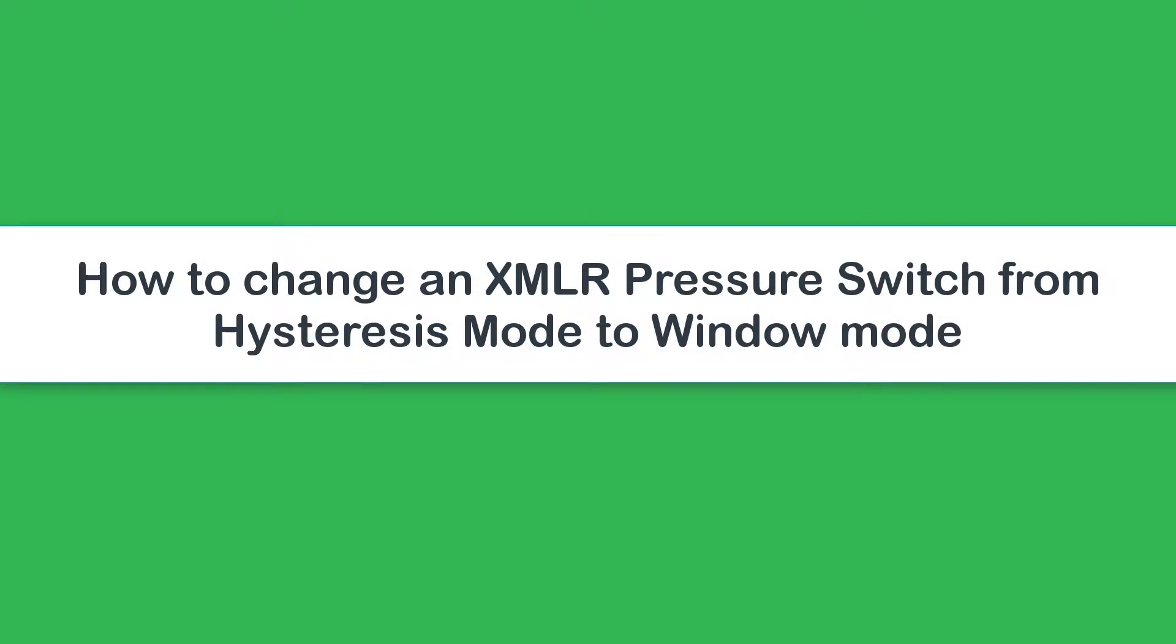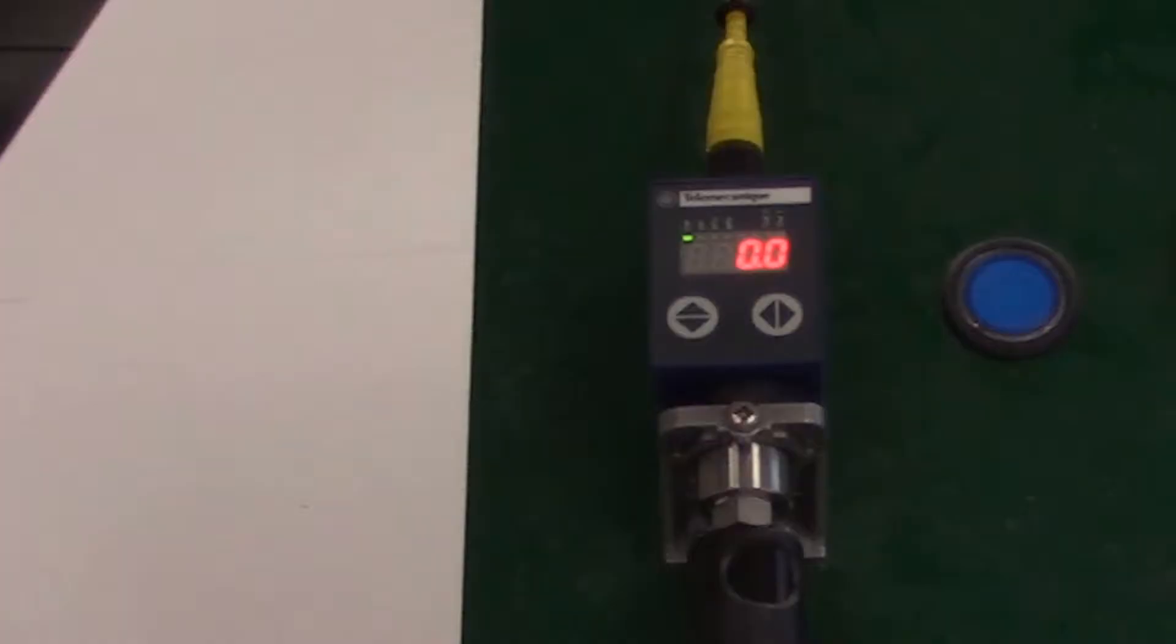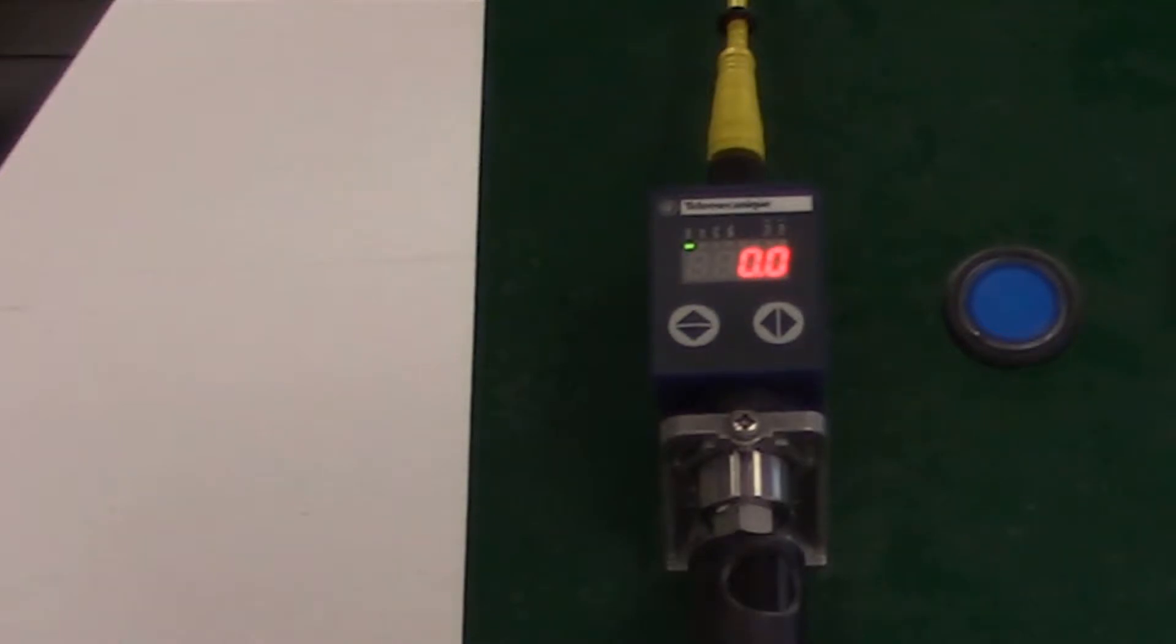How to change an XMLR pressure switch from Hysteresis mode into Window mode. Hysteresis mode normally open is the default mode for an XMLR pressure switch. Hysteresis mode is useful for applications such as pumping or filling and emptying of vessels.